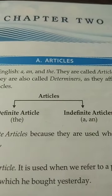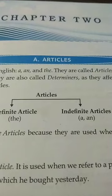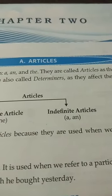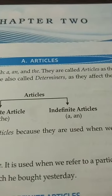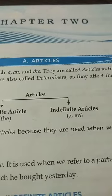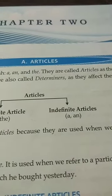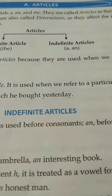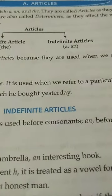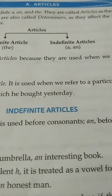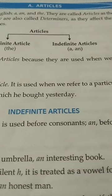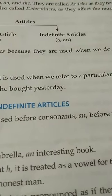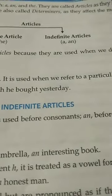Hello students. In the previous class we had started articles. We had discussed the three articles in English: 'a', 'an', and 'the'. I had explained the two types of articles: the first one is the definite article 'the', and secondly the indefinite articles 'a' and 'an'. I had explained when we use indefinite article 'a' and where we use 'an'. 'A' is used before consonants and 'an' is used before words beginning with a vowel. So today we will discuss where we use an indefinite article.